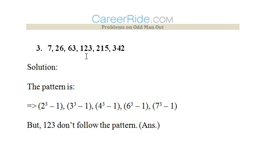One thing can be noticed - that each number is a cube number minus one. So 8 minus 1 is 7, 27 minus 1 is 26, 64 minus 1 is 63. 216 minus 1 is 215, 343 minus 1 is 342. So we can clearly see 123 is the only exception. 2³ - 1 forms 7, 3³ - 1 forms 26, 4³ - 1 forms 63.